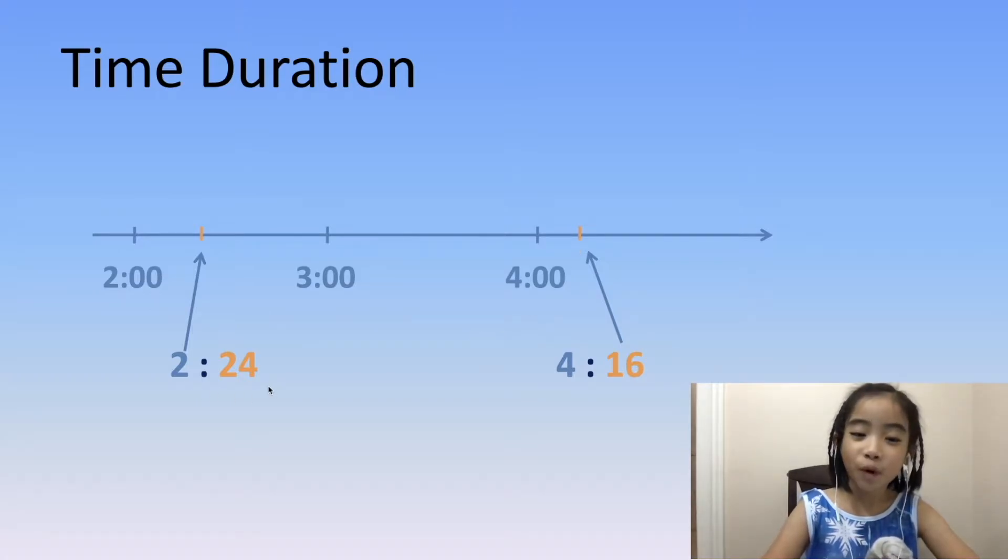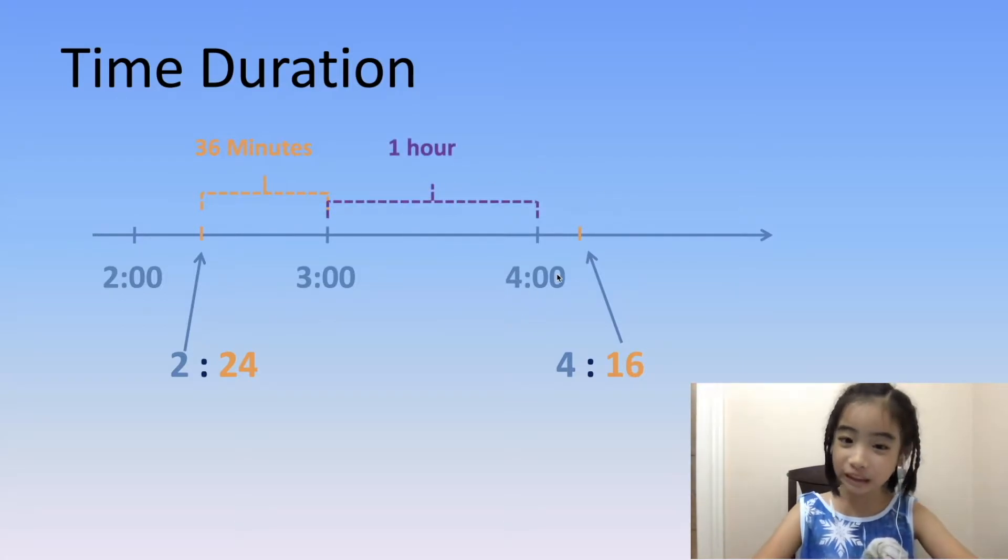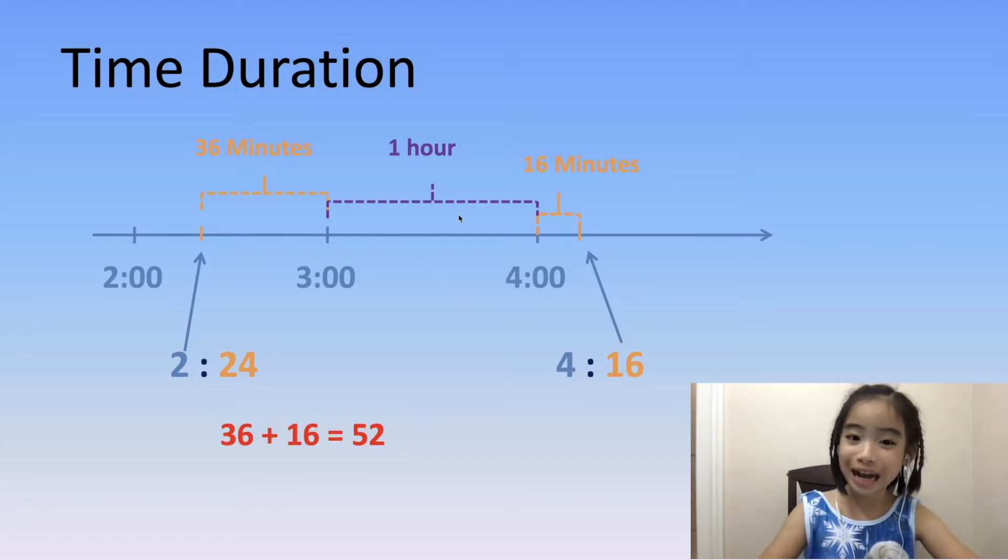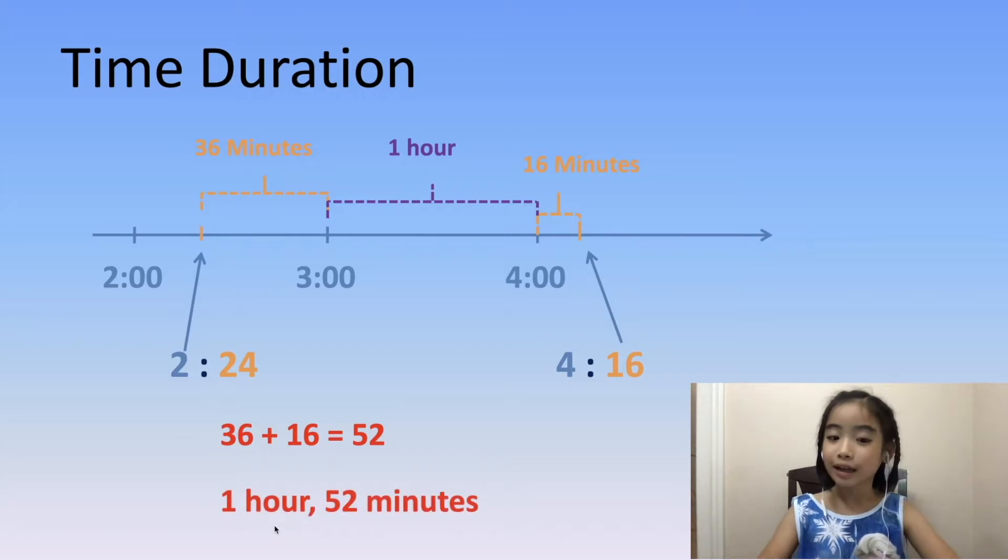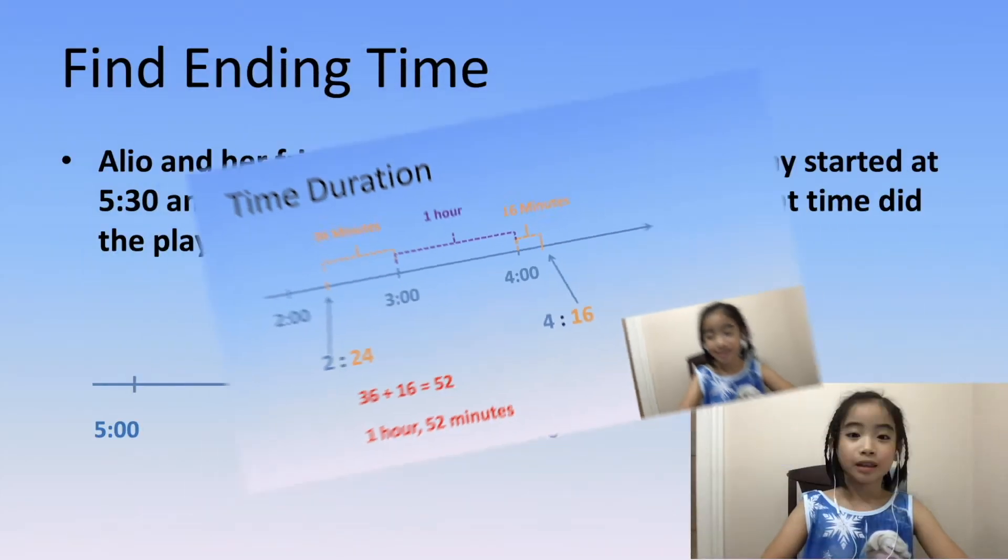From 2:24 to 3 o'clock is 36 minutes. From 3 o'clock to 4 o'clock is 1 hour. And from 4 o'clock to 4:16 is 16 minutes. So we add 36 minutes plus 16 minutes, which is 52 minutes, and the one hour stays the same. So the time duration is 1 hour and 52 minutes.